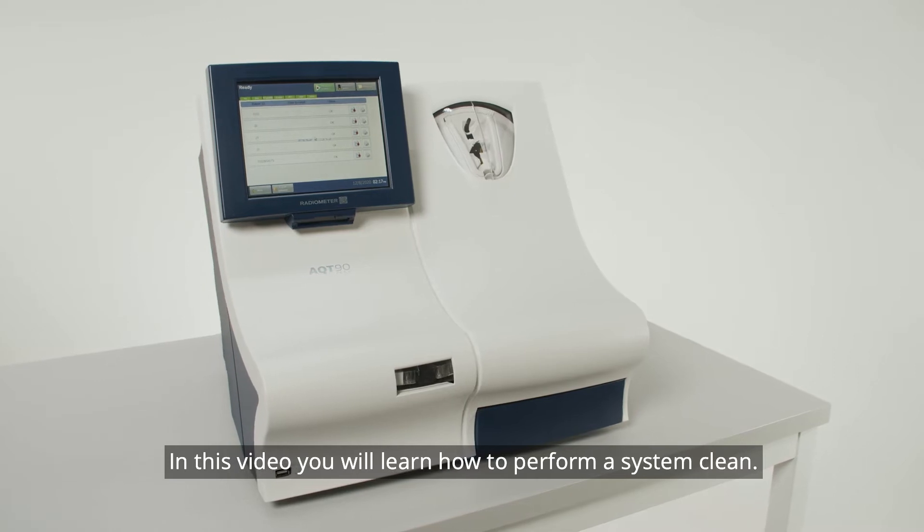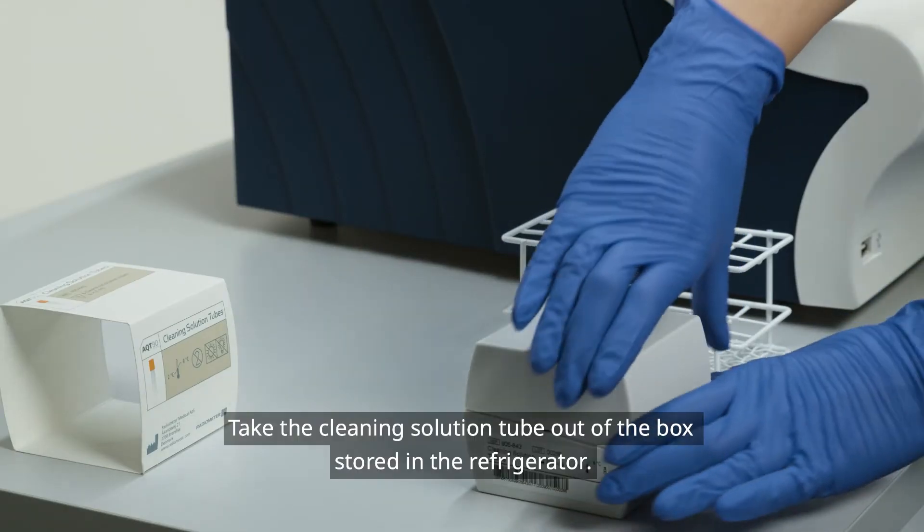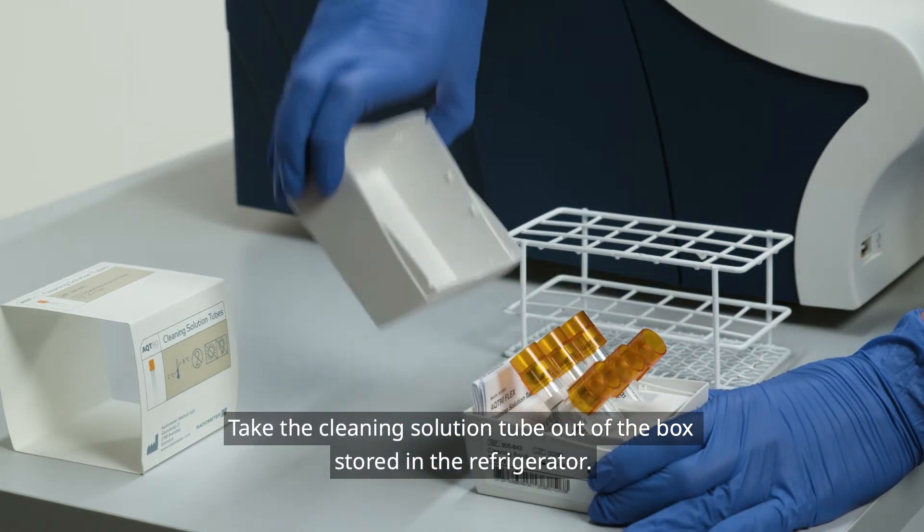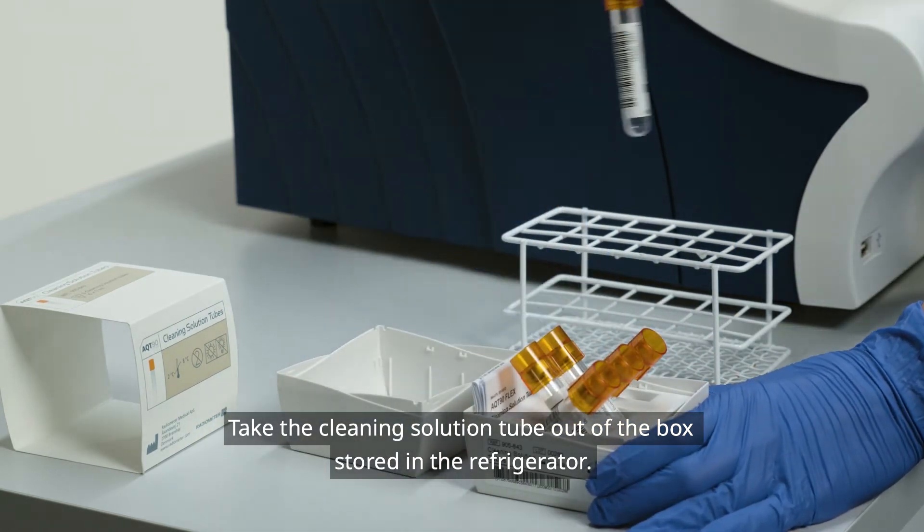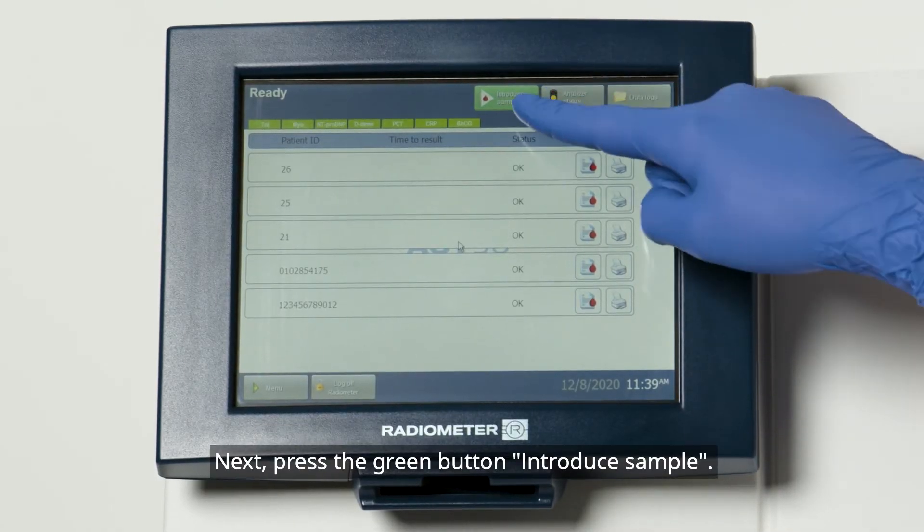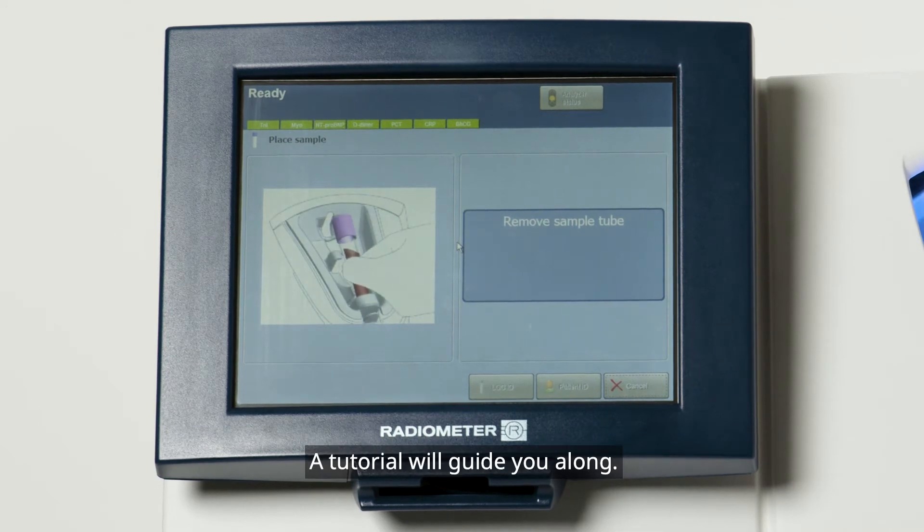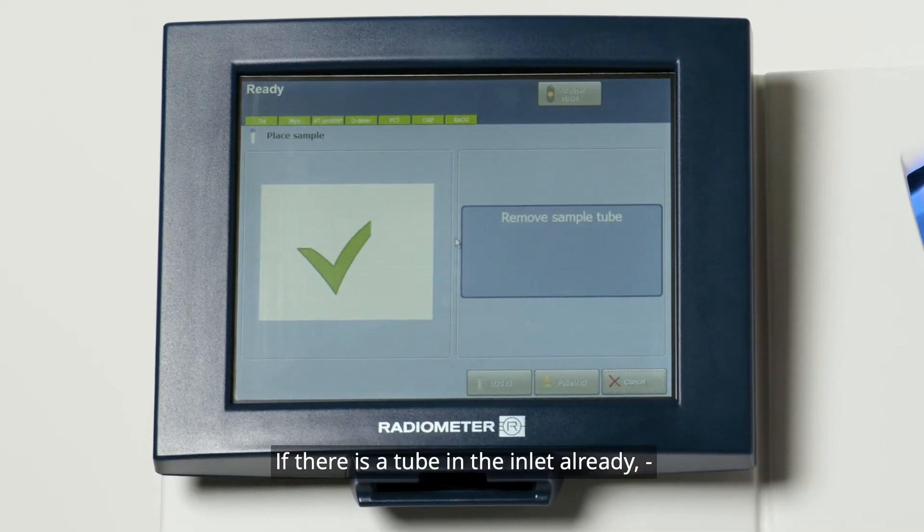In this video you will learn how to perform a system clean. Take the cleaning solution tube out of the box stored in the refrigerator. Next, press the green button to introduce the sample. A tutorial will guide you along.